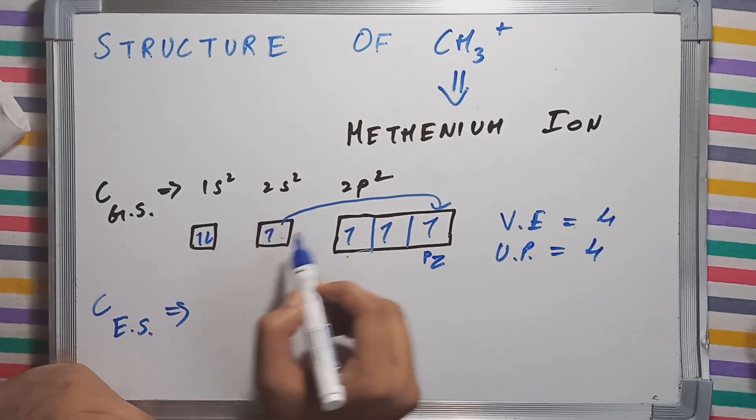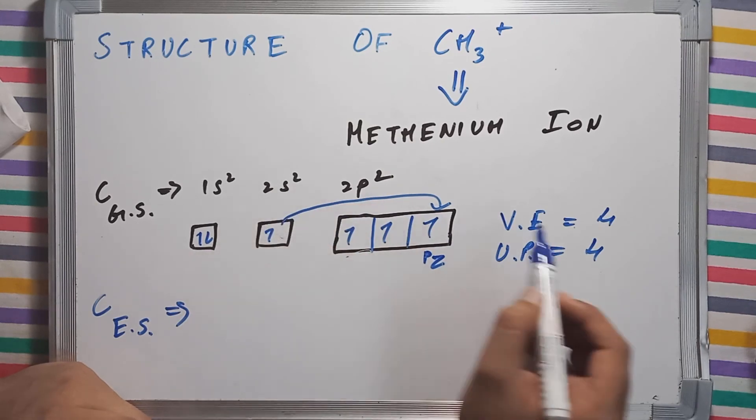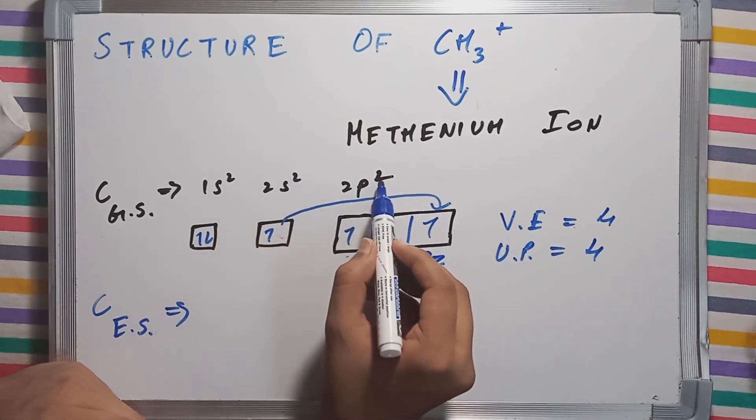Now notice the number of valence electrons is 4 and number of unpaired electrons is also 4. The number of valence electrons can be seen without even drawing these structures. The number of valence electrons is 2 plus 2, 4.